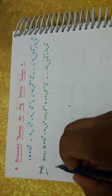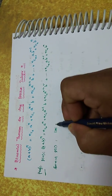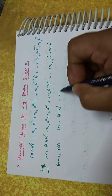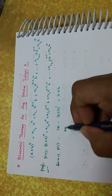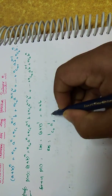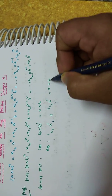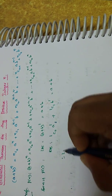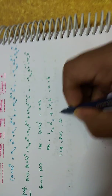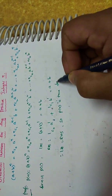For n = 1, P(1): LHS is (a + b)^1. RHS is 1C0 * a^1 + 1C1 * b^1, that is a + b. Therefore LHS = RHS, so P(n) is true for n = 1.